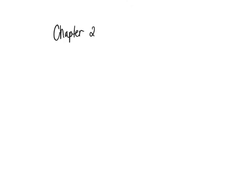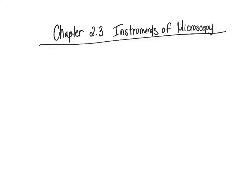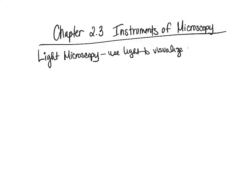We are at chapter 2.3, the instruments of microscopy. In this portion of the chapter, we're going to be talking about all the different types of microscopes. We're going to start with light microscopy. Light microscopy, as its name implies, is where we use light to visualize images. Later on, we'll see several microscopes that do not use light, but we are going to talk about the light microscopes first.